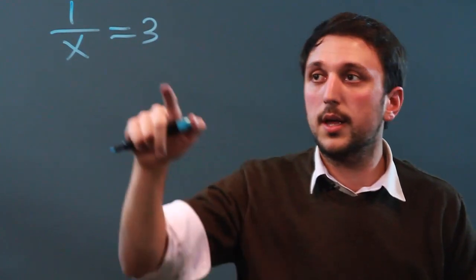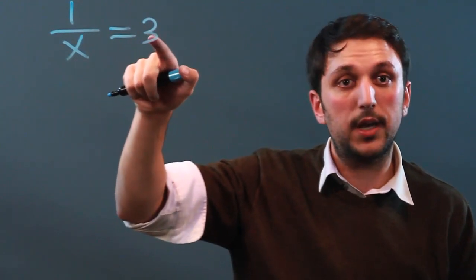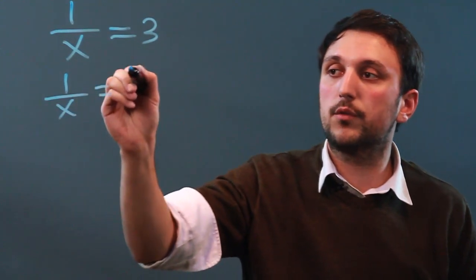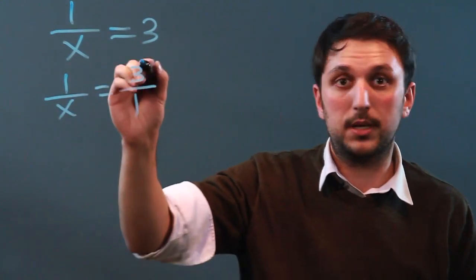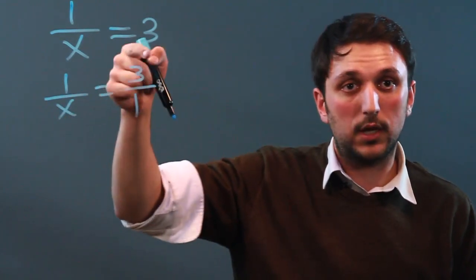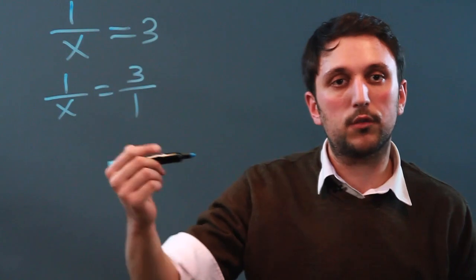The first thing we need to do is make sure that this is represented as a fraction. So, 1 over x equals 3 over 1, because 3 divided by 1 is 3. So, now that we have a fraction, an equal sign, and another fraction, we can cross multiply.